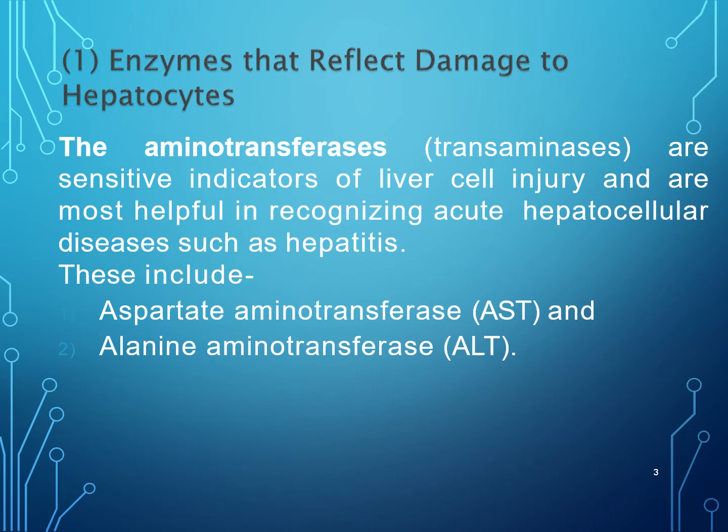Enzymes that reflect damage to the hepatocytes: the aminotransferases are a group of enzymes which serve as a sensitive indicator of liver cell injury. They help in recognizing acute hepatocellular diseases like hepatitis. These aminotransferases include aspartate aminotransferase (AST) and alanine aminotransferase (ALT).